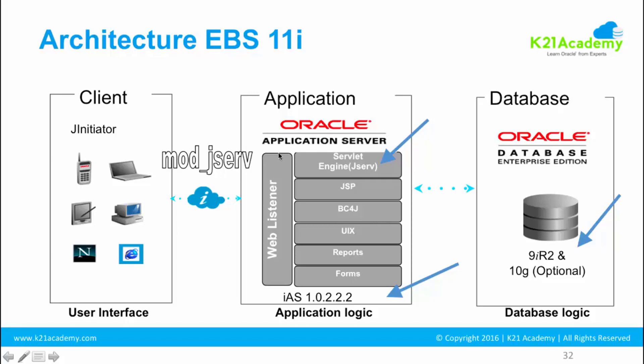In the application tier, in 11i it used to be 10g application server or 9i application server, which was IAS — Internet Application Server 10.1.2.2.2. Whereas in 12.2, that is replaced by WebLogic server. So you still have an application server, but in the previous 11i version the application server was Oracle's own at version 10.1.2.2.2, and now in 12.2 it's WebLogic server. There was also a servlet engine called JSERV, which has been replaced by WebLogic server using JVMs.